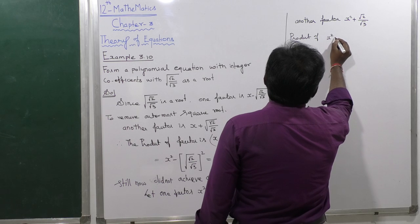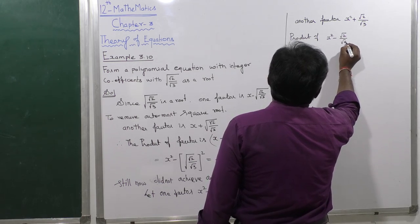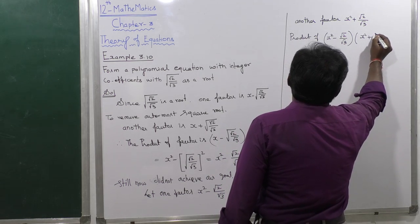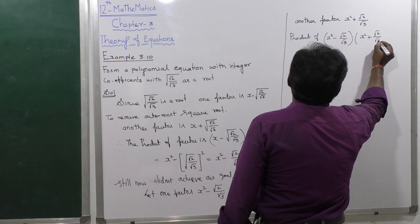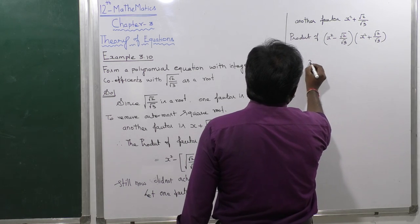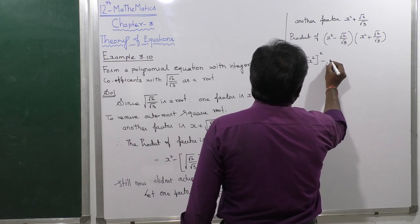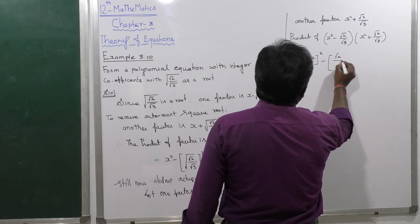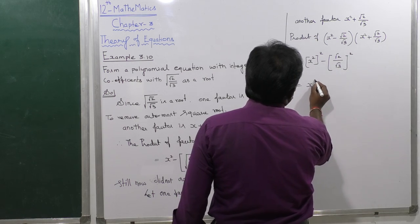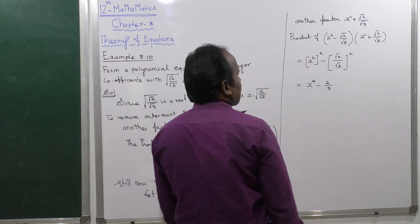The product of the third and fourth factors: (x squared minus root 2 divided by root 3) times (x squared plus root 2 divided by root 3). Using (a+b)(a-b), this equals x squared whole square minus (root 2 divided by root 3) whole square, which equals x to the power 4 minus 2 divided by 3.